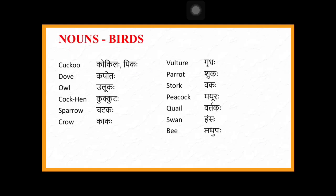Let us start with animal and bird names. We have words like kukuha, kokilaha, pikaha — whenever you see each word, understand which gender category it belongs to. Then: kapodaha, ulukaha, kukkutaha, chattakaha, kakaha, girdhraha, shukaha, vakaha, mayuraha, vartakaha.